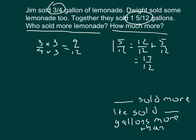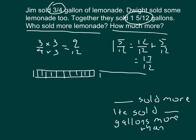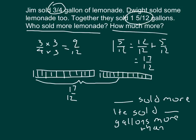We're looking at twelfths, so let's draw that out with two wholes each divided into twelfths. Looking at all the lemonade they sold together, that's one-and-five-twelfths, which equals seventeen-twelfths. We know that nine-twelfths of that was sold by Jim.